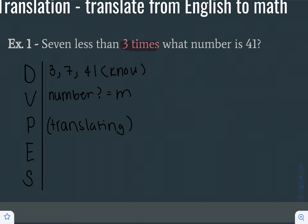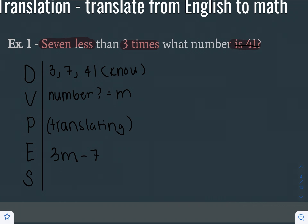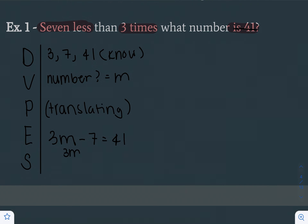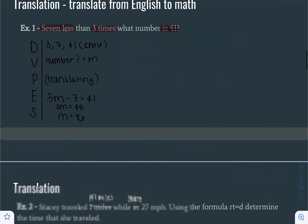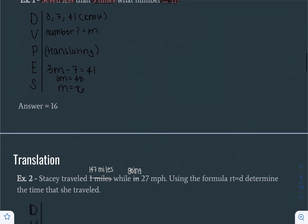So 3 times what number? It's going to be 3 times the number, minus 7 — because 7 less means minus 7 — equals 41. Now we solve: 3M equals 48, which means M equals 16. So our answer is 16.